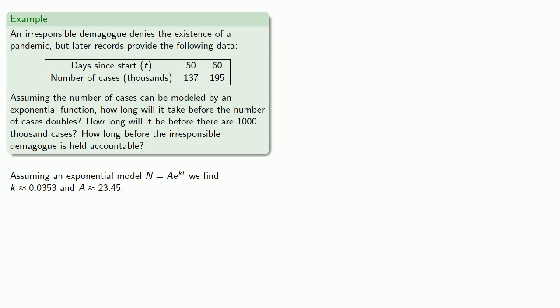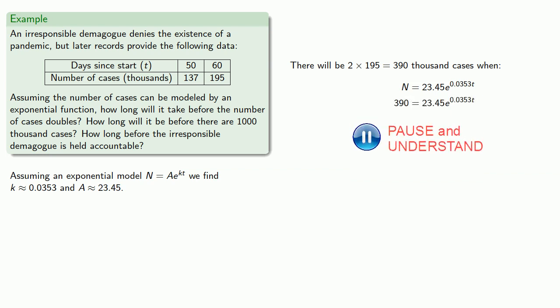Now we want, well, actually we don't want, but the question is asking us to find when the number of cases doubles. So here on day 60, we have 195,000 cases, and so there will be twice as many, 390,000 cases. If we solve that, we find t is about equal to 80.